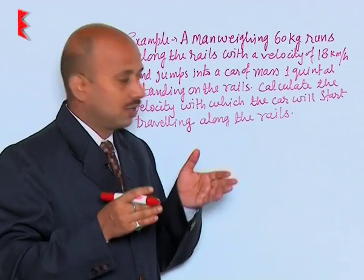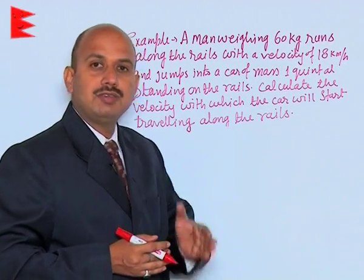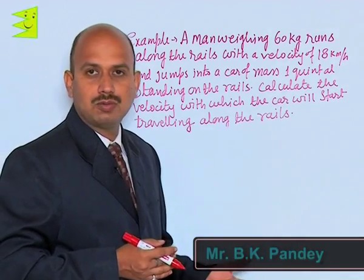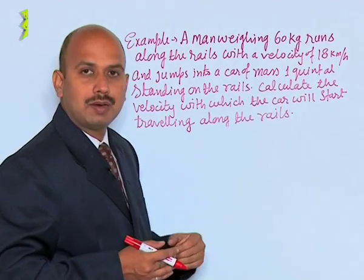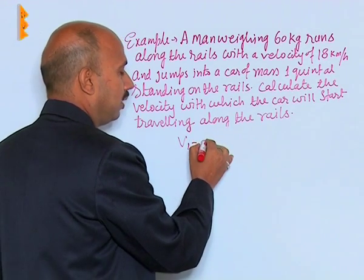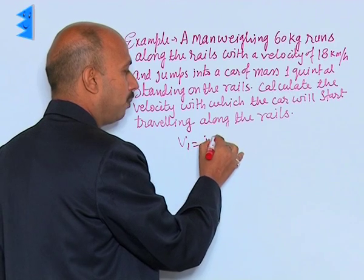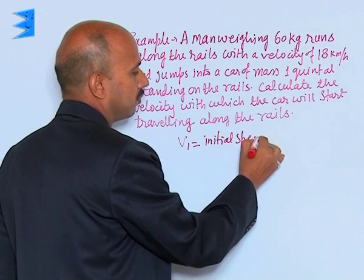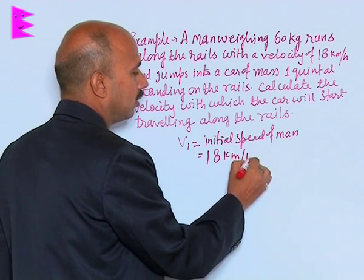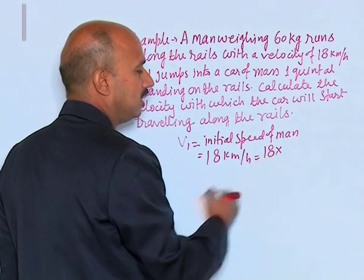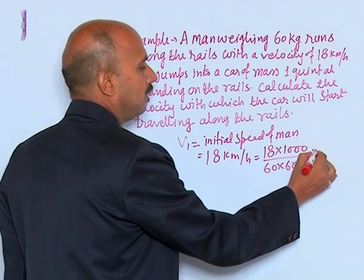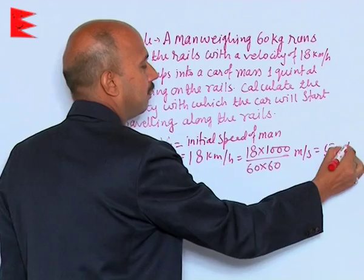The car is standing on the rails, so its initial velocity is 0. The initial velocity of the car V2 is 0. The man is running at 18 kilometers per hour, so V1, the initial speed of the man, is 18 km/h. Converting to SI units: 18 × 1000 divided by 60 × 60 = 5 meters per second.